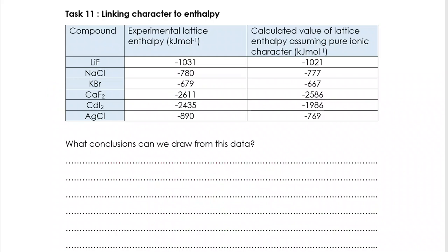Task 11: linking character to enthalpy. So let's have a think about what this data is showing us and let's see what conclusions you can draw. First thing that I'm going to do is actually note the difference between the experimental lattice enthalpy, what you find if you carry this experiment out, or you find the data by alternative means, because obviously we can use Hess cycles and Born-Haber cycles to find unknowns using other data. But that's what we'd get experimentally. For example, lithium fluoride negative 1031.